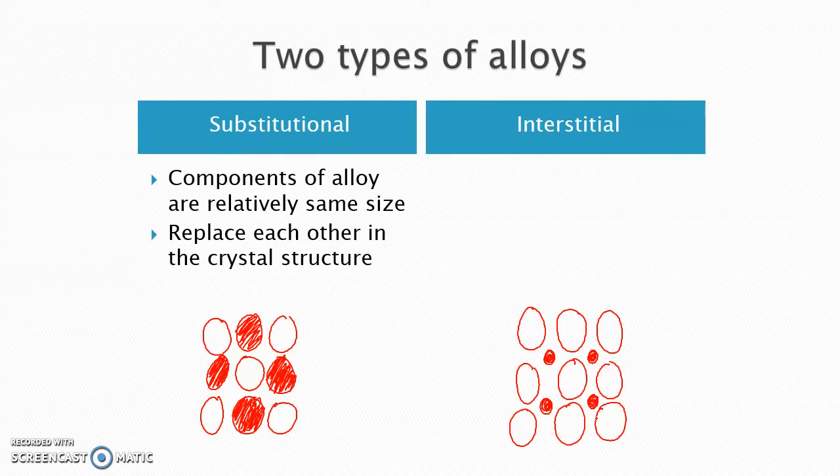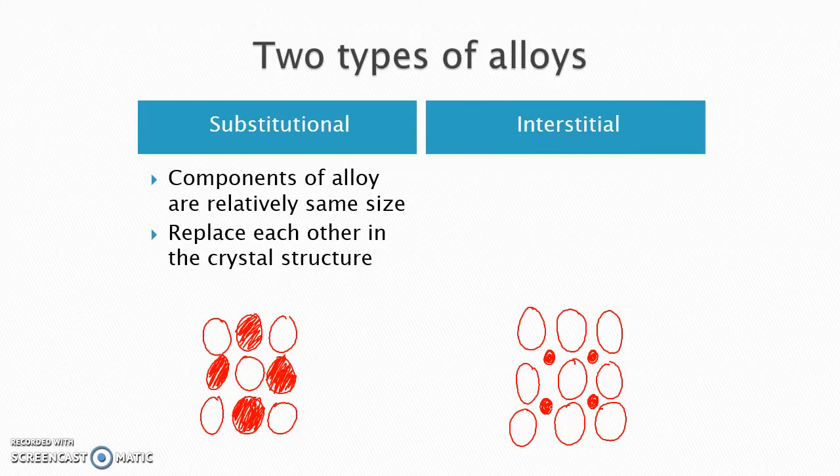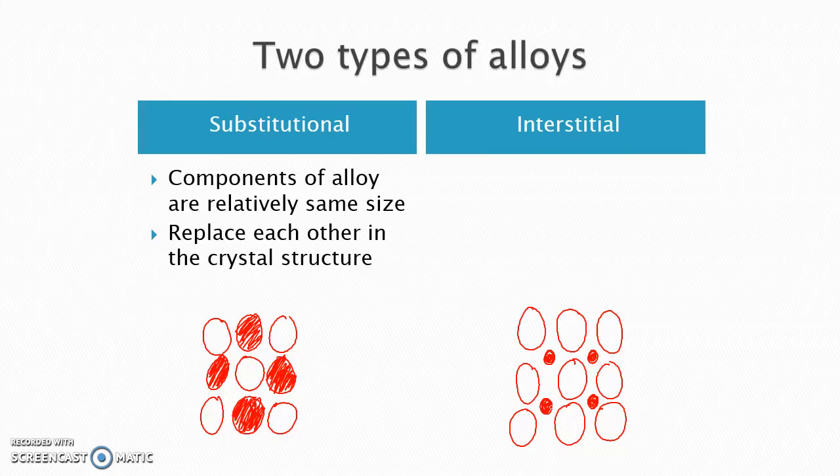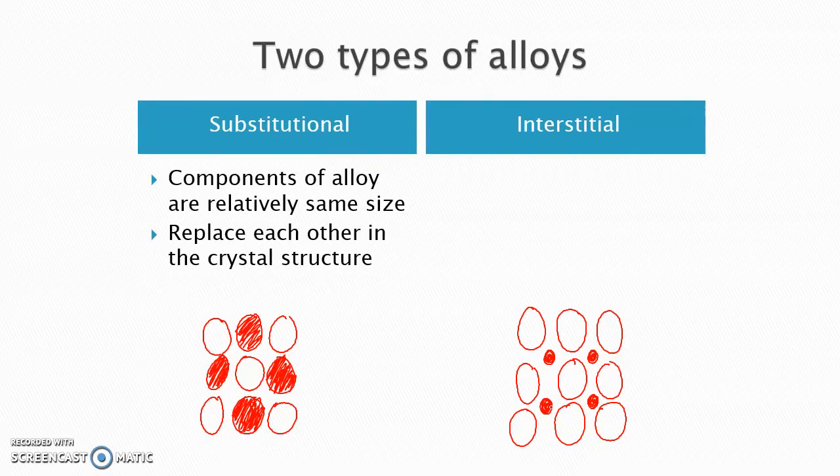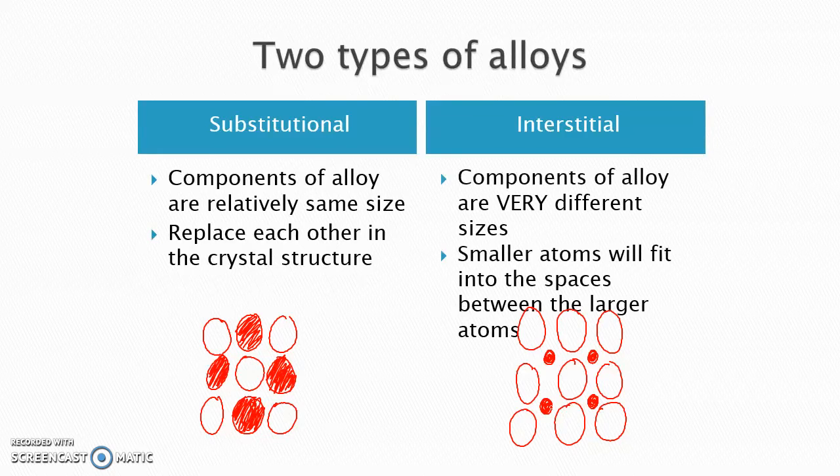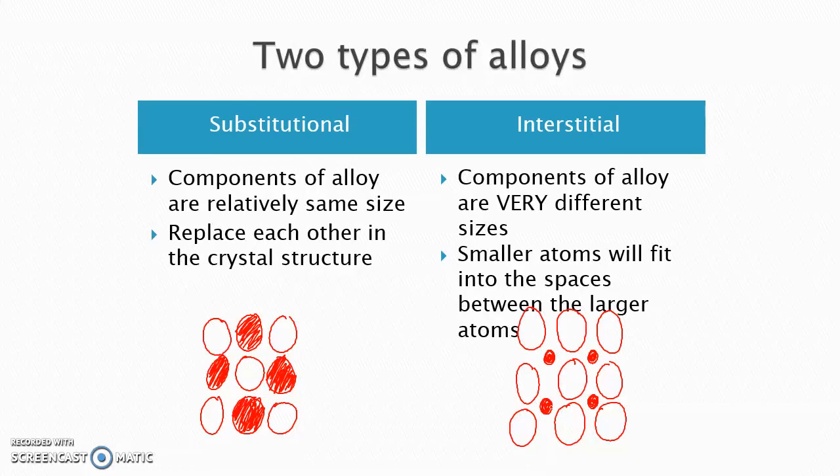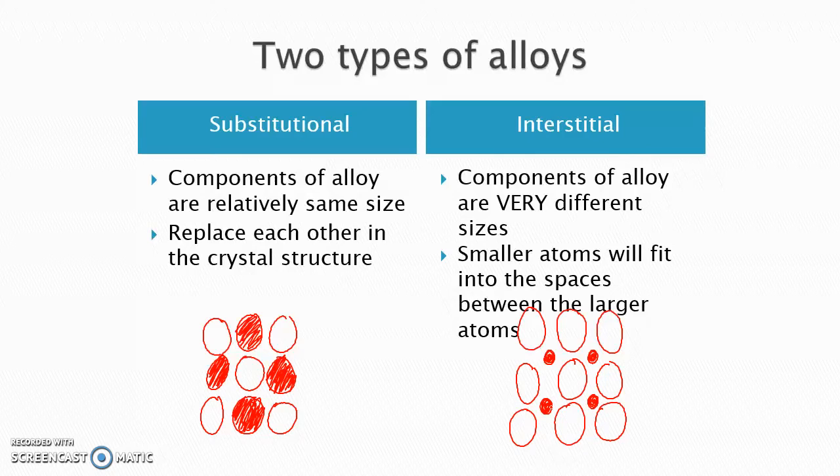So rather than replacing one of the atoms, they just kind of fill in the gaps. So this is usually going to lead to it being a lot more durable because there's not as much wiggle room. So an interstitial alloy, the components are very different sizes. So you have ones that are really big and ones that are very small so that you can kind of fit in the little gaps in between. And so again, the smaller ones are going to kind of fill in the space between the larger atoms.